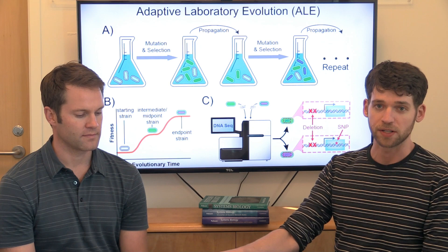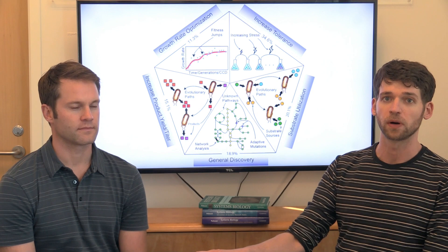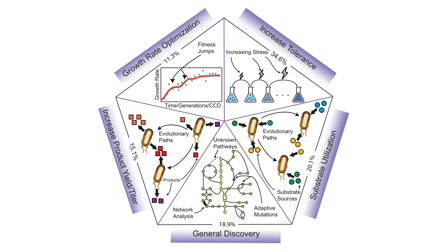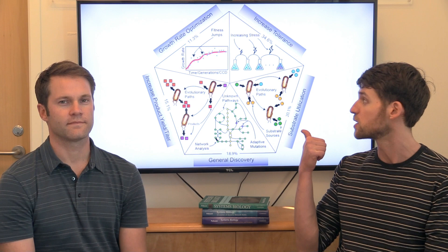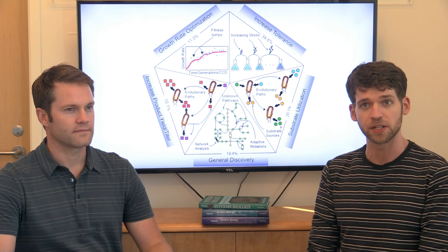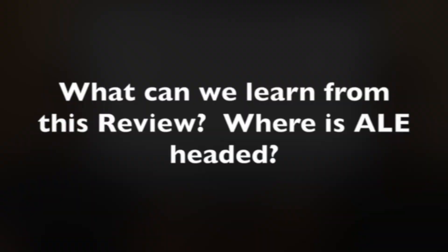So this particular paper we just published is a review article on the uses of ALE for industrial biotechnology for the most part. And we collected more than 150 different papers that use ALE to evolve microbes for various purposes or to study various processes and broke them down into various categories here and then get into some case studies and examples that really highlight the way ALE can be used to select for some property of interest you want.